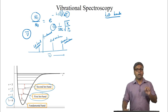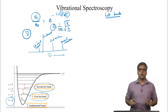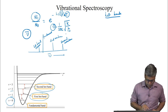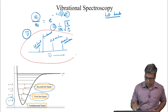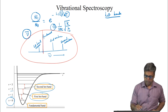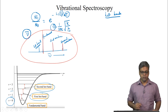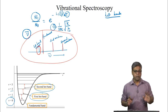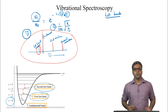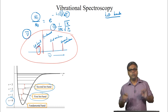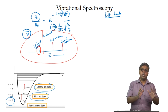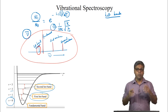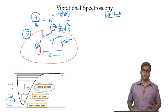Let us see what all these transitions look like for a diatomic molecule over a fairly large spectral region. We have the fundamental band, the first overtone, the second overtone, and the hot band which appears at a smaller wave number compared to the fundamental. The V=1 to V=2 hot band is at a smaller frequency than the fundamental because the gap between V=2 and V=1 is smaller than the gap between V=1 and V=0.